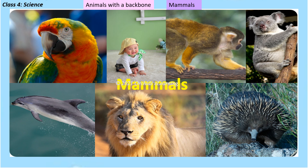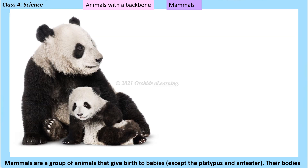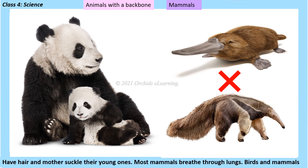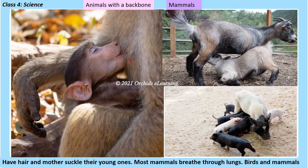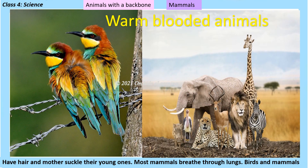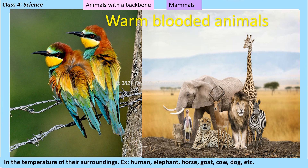Mammals are a group of animals that give birth to babies, except the platypus and anteater. Their bodies have hair and mothers suckle their young ones. Most mammals breathe through the lungs. Birds and mammals are warm-blooded animals, meaning their body temperature remains constant despite changes in the temperature of their surroundings.